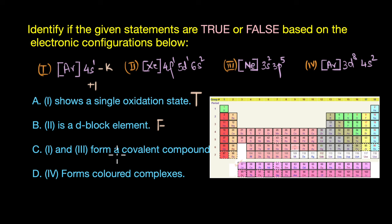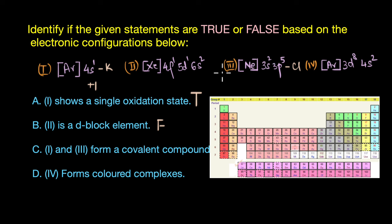The third statement says elements 1 and 3 form a covalent compound. Element 1 is potassium and element 3 — Ne 3s2 3p5 — refers to chlorine. A bond between a metal and a nonmetal is ionic, not covalent. Potassium loses one electron and chlorine accepts one electron to form an ionic compound; they do not share electrons. So statement C is also false.